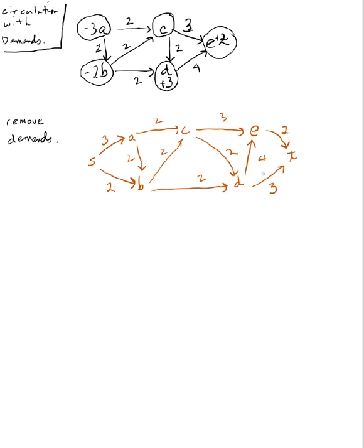Now I use the Ford Fulkerson to compute maximum flow on this network and then go back and get the circulation on the original network. So to do that, let's change color here. So my first augmenting path will be, let's say, S to A, C, E, T.